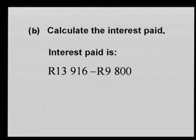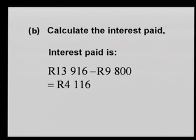Nelson was ripped off — the DVD player cost R9,800 but he ends up paying R13,916. It would have been far better to pay cash. The interest paid is R13,916 minus R9,800, which equals R4,116. He paid an additional R4,116 — that's how these lenders make their money.